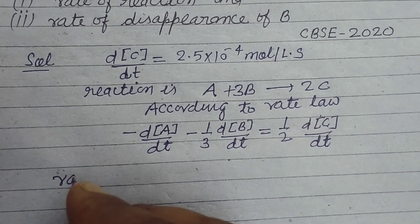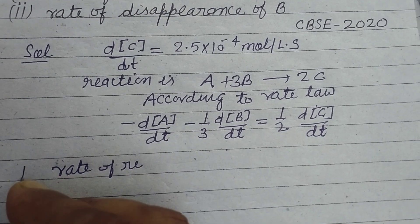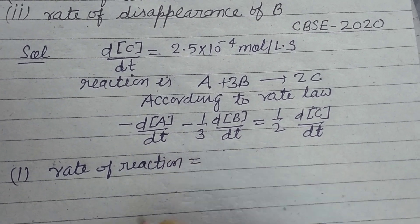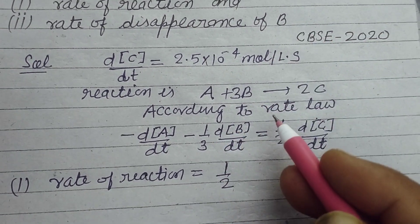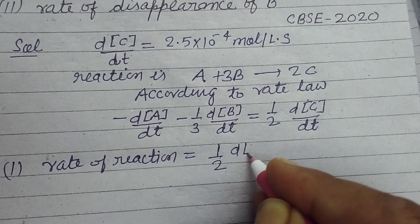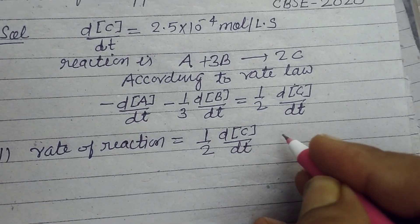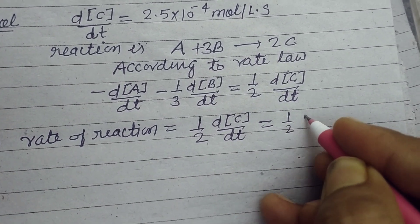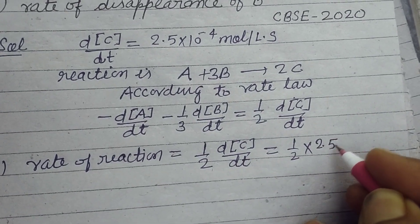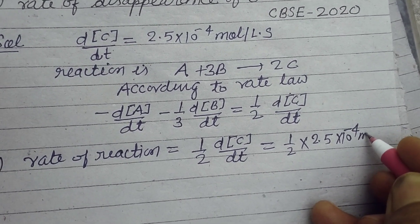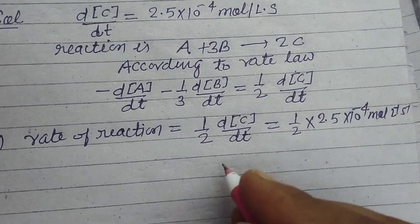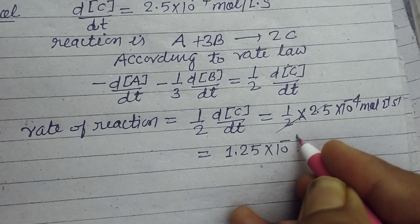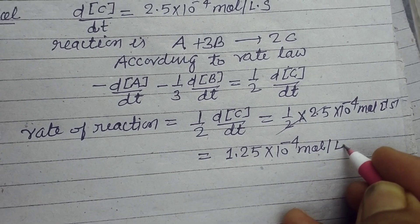Now the first question is asking for the rate of reaction. The rate of reaction is equal to half of dc/dt. Since d[C]/dt is given as 2.5×10⁻⁴ mol per liter per second, on dividing by 2 we get 1.25×10⁻⁴ mole per liter per second.